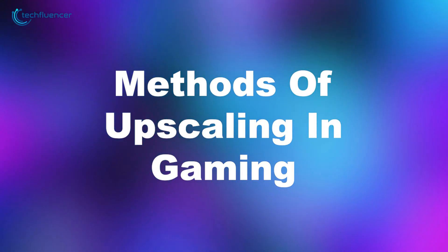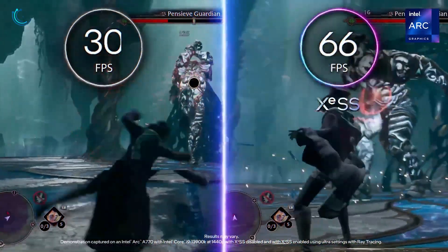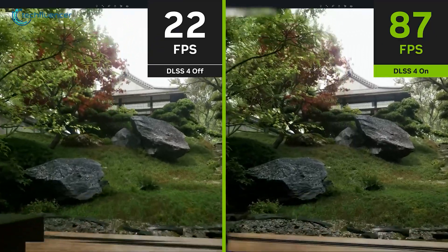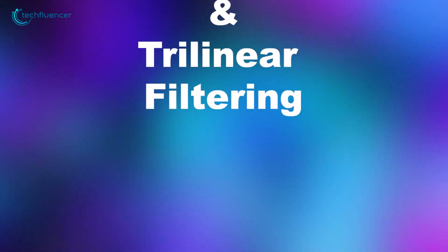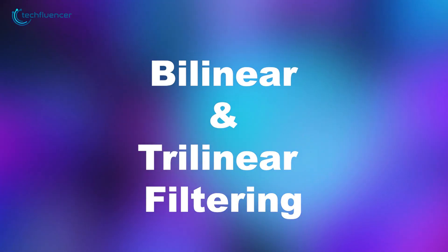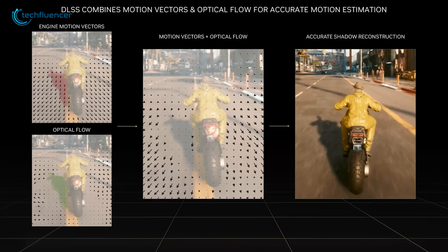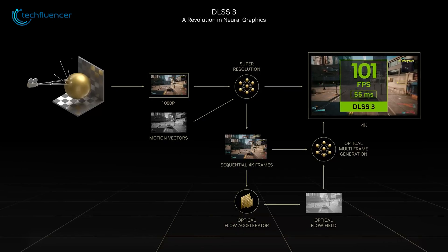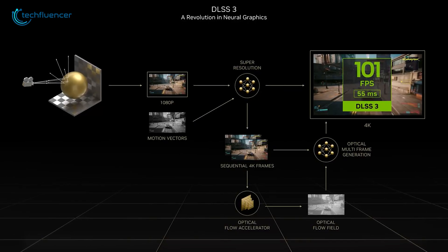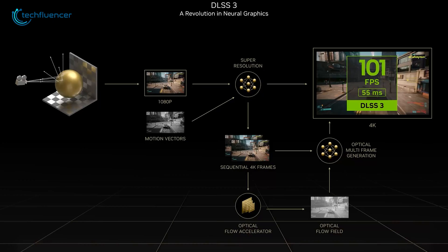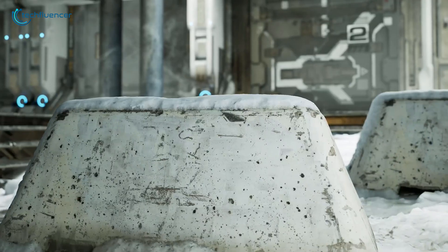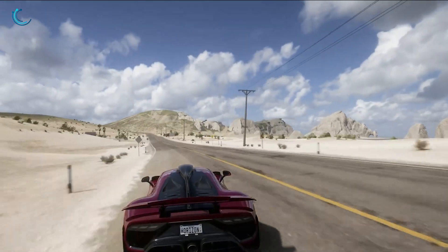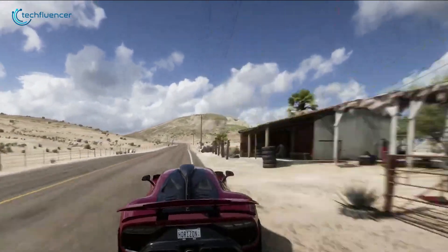There are a few main methods of upscaling in gaming, with some being more advanced than others. The first is Basic Upscaling: Bilinear and Trilinear Filtering. These are the simplest methods. They work by averaging nearby pixels to create new ones. Bilinear Filtering averages 4 pixels, while Trilinear Filtering does something similar but looks at different texture levels. They're fast but don't provide the sharpest images, often making them look a bit blurry. They're good for situations where speed matters more than perfect image quality.